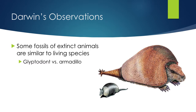He also noted that many fossils of extinct animals were very similar to living species. For example, we have the armadillo and the glyptodont — the glyptodont is thought to be an ancestor of the armadillo. You can see it's very similar in the dome of its shell, though it looks almost more like a beaver than an armadillo. The similarity between those two organisms was another contributing factor to Darwin's ideas.